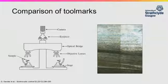The image provided shows a comparison macroscope. You can see in the image that the macroscope has two stages. This is so the crime scene tool mark can be placed on one stage and the control tool mark can be placed on the other stage and examined simultaneously. Each tool mark can be independently manipulated in order to see if there are any points of agreement or complete disagreement between the tool marks.